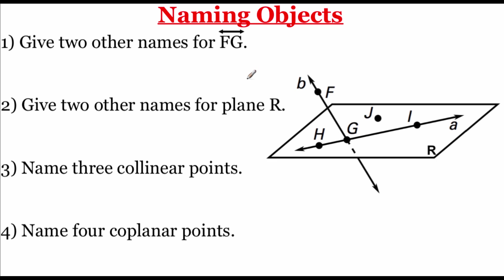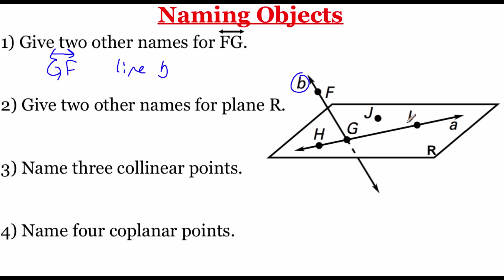Here we've got a few examples to run through naming some different objects using our picture on the right. Number one asks for two different names for the line FG. Since order is not important, we could name it line GF — with arrowheads on each end. There's also a lowercase B written next to the line, so we could call it line B. Number two asks for two other names for plane R. We need three non-collinear points — we couldn't say HGI since they're all on the same line. But we could use HJI, since point J is not on that same line. Or we could use GJI.